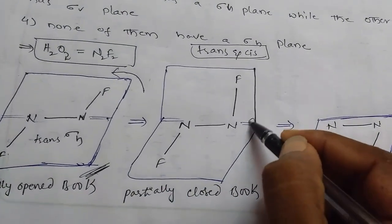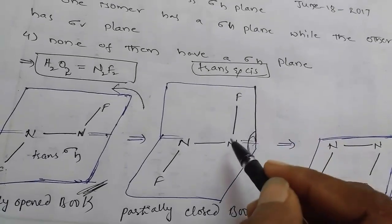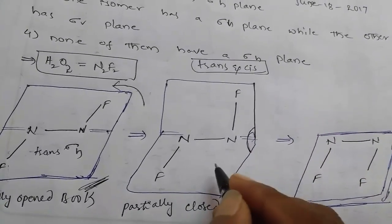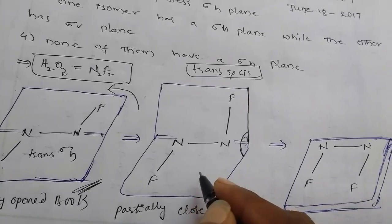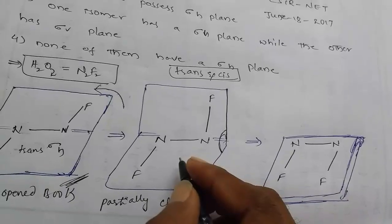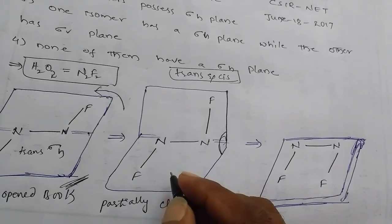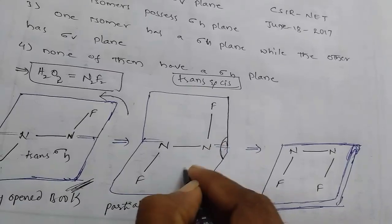So that's why we have here an angle. So this contains only C2 symmetry. There is no plane of symmetry. It doesn't contain a plane of symmetry.